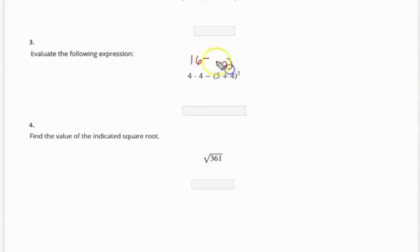So this then becomes 16 minus 81. And that will give us a negative 65.